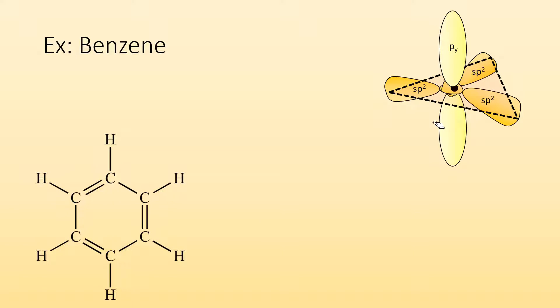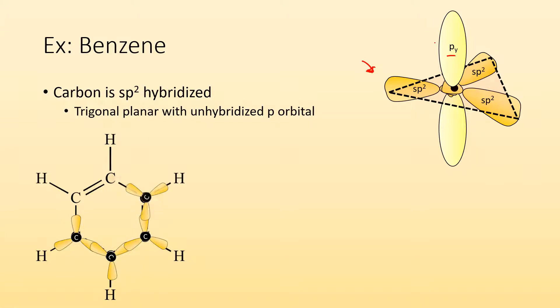Benzene is always the go-to example for delocalized electrons. If we look at carbon, all the carbons are sp2 hybridized. You can see over here, I have three sp2 hybridized orbitals, and I have an unhybridized p orbital still. So we end up with trigonal planar geometry around each carbon with an unhybridized p orbital.